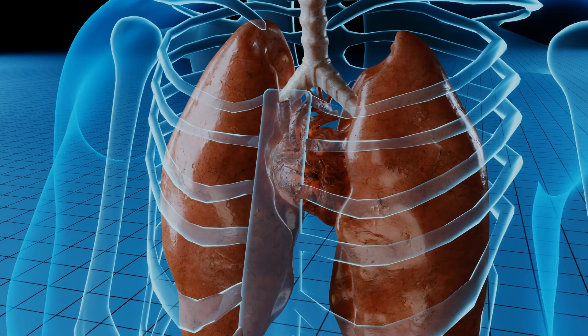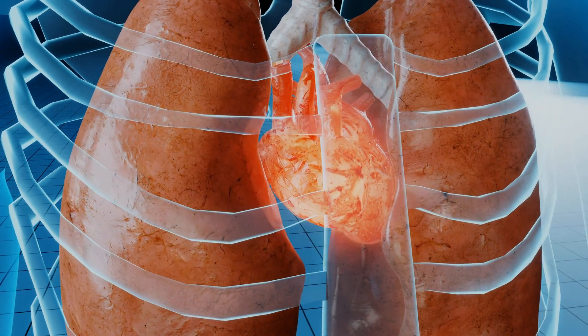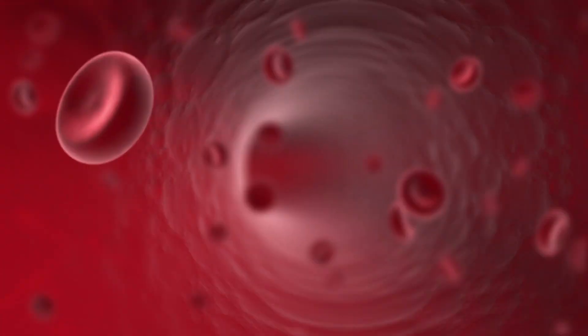Let's follow the blood: starting in the right side of the heart, the heart contracts and pumps blood out through the pulmonary artery to the lungs. At the capillaries surrounding the alveoli, oxygen absorbs into the blood. The blood then goes through the pulmonary vein into the left side of the heart, which pumps it out through the circulatory system to deliver oxygen to cells throughout the body.